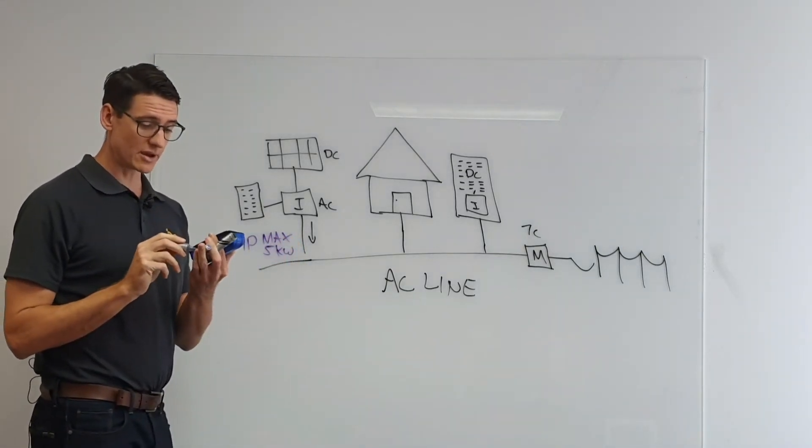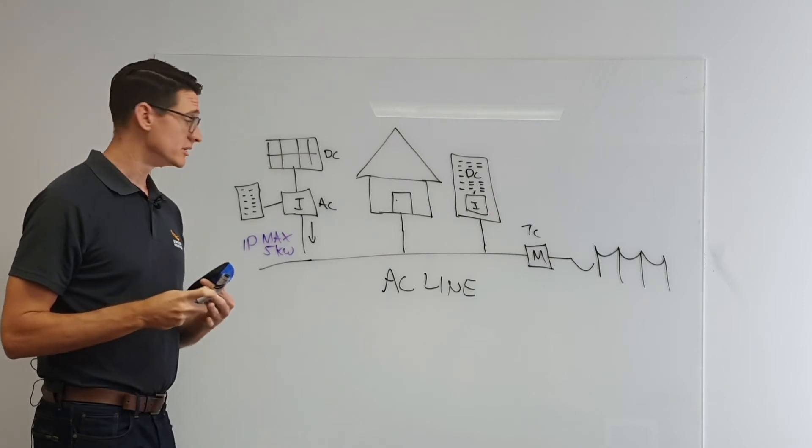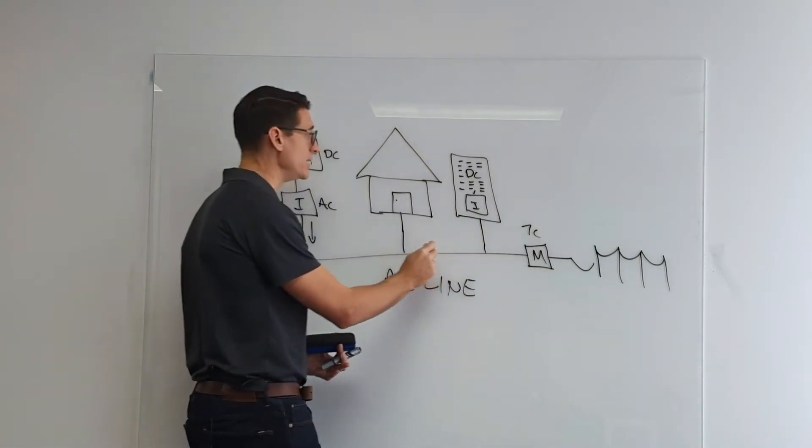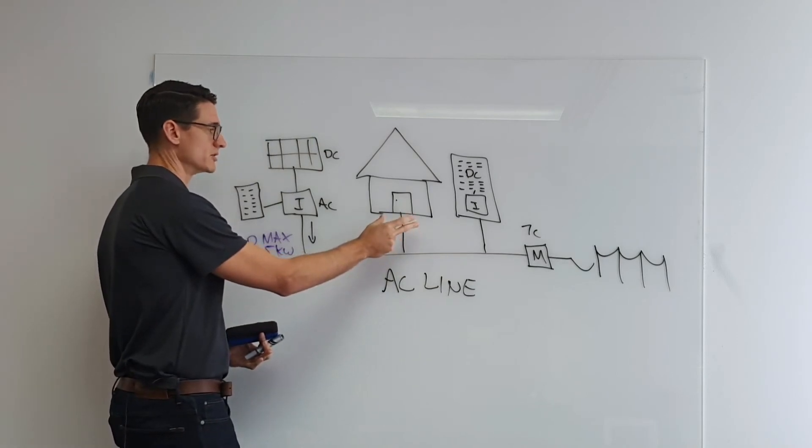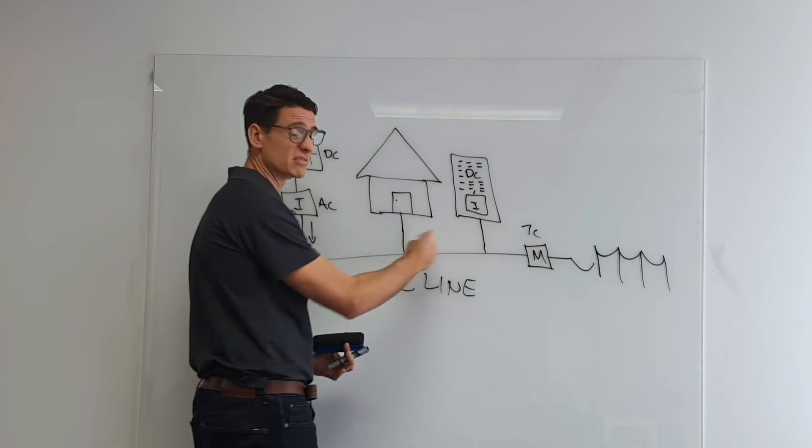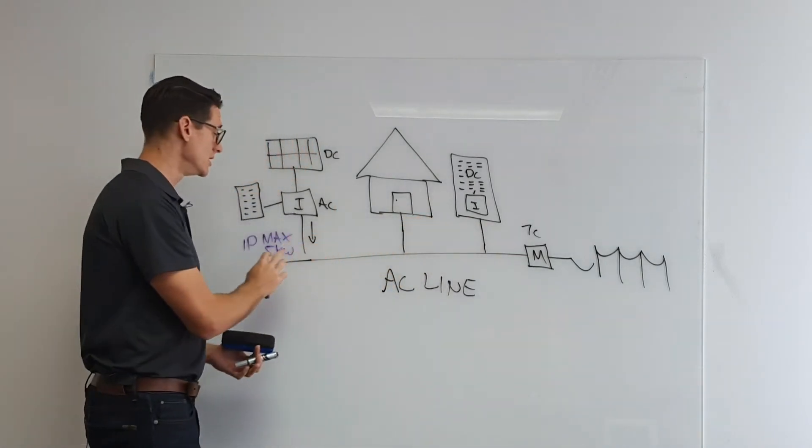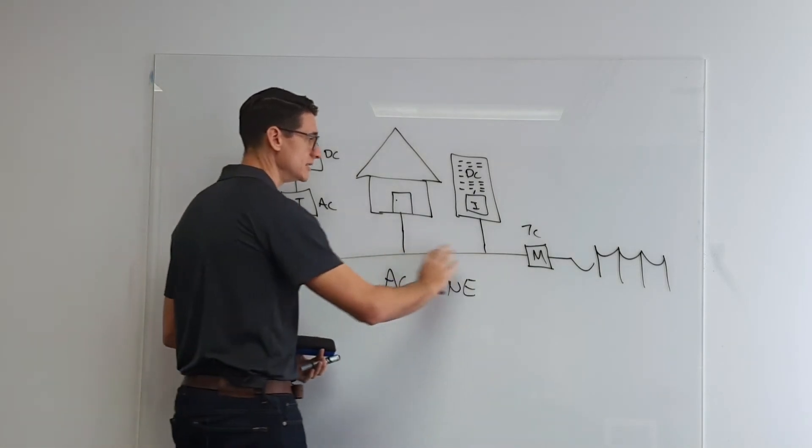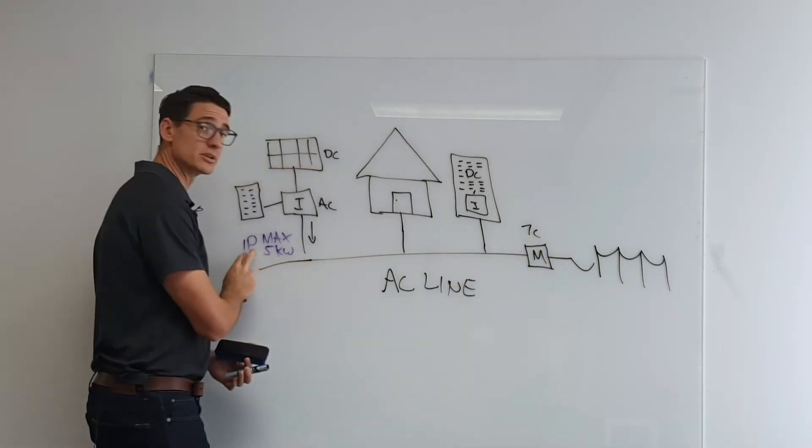So at no point in time are you allowed to send more than five kilowatts down this AC line, be it for the purposes of covering the loads within a home, be it for the purposes of charging a battery, electric vehicle, whatever you can fathom, the maximum energy you're allowed to export out of your inverter onto the AC line, ultimately out to the grid, is five kilowatts.